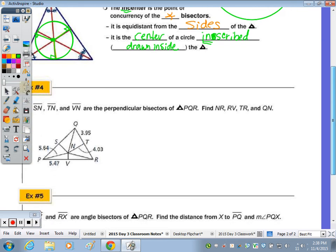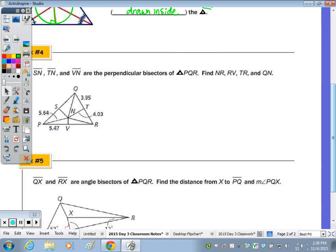In example number four, they say that SN, TN, and VN are all the perpendicular bisectors of the triangle. You've got to remember that a perpendicular bisector intersects a segment at its midpoint. So SN, when it hits this segment, it divides the side into two congruent segments. Another important concept, if you're looking at SN, TN, and VN, that means N is the circumcenter, which is the same distance from the vertices. You can draw your circle on the outside.